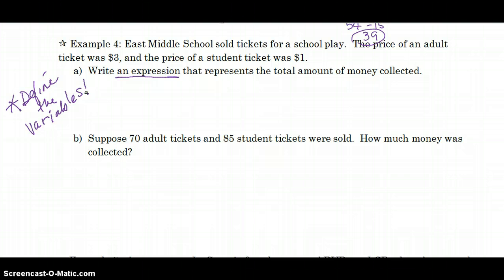Okay. So, what do we not know? We know the cost of each ticket. Adults are three and students are one. What I don't know is I don't know how many tickets they sold. I don't know how many adult tickets were sold. So, I'm going to let A stand for adult tickets or the number of adult tickets sold.